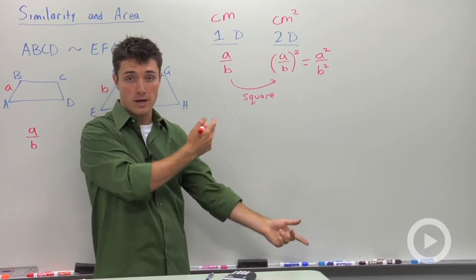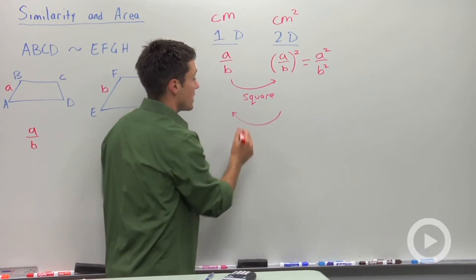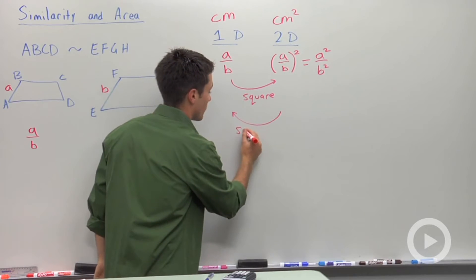To go in the opposite direction, you're going to have to do the opposite of squaring something, which is the square root.